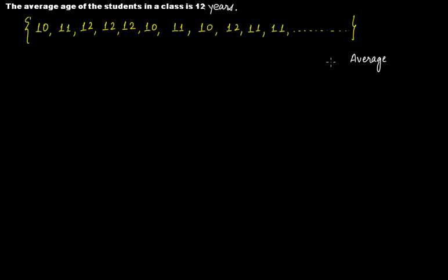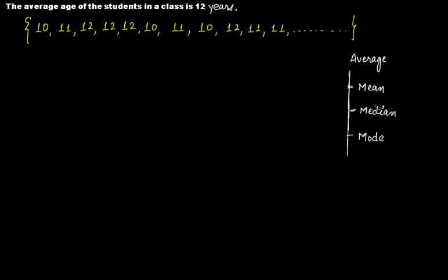Before entering into the discussion, I want to tell you that in order to calculate average, we actually have three tools. The first one is mean, the second one is median, and the third one is mode. Mean, median, and mode — these are the three tools using which we calculate average. It depends upon the situation whether you will use one, two, or all of these.